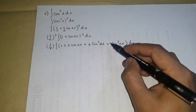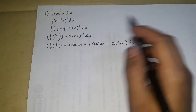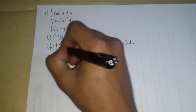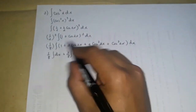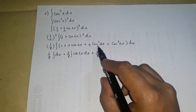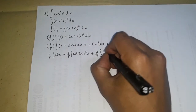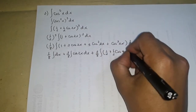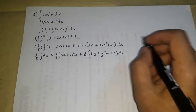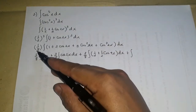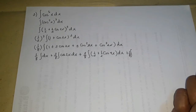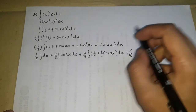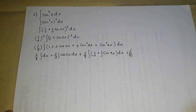The integral becomes (1/8) times the integral of 1 + 3cos(2x) + 3cos²(2x) + cos³(2x) dx. We integrate term by term: (1/8)∫dx + (3/8)∫cos(2x)dx + (3/8)∫cos²(2x)dx + (1/8)∫cos³(2x)dx. For cos²(2x), apply the identity to get 1/2 + (1/2)cos(4x). For cos³(2x), apply the odd-power technique.